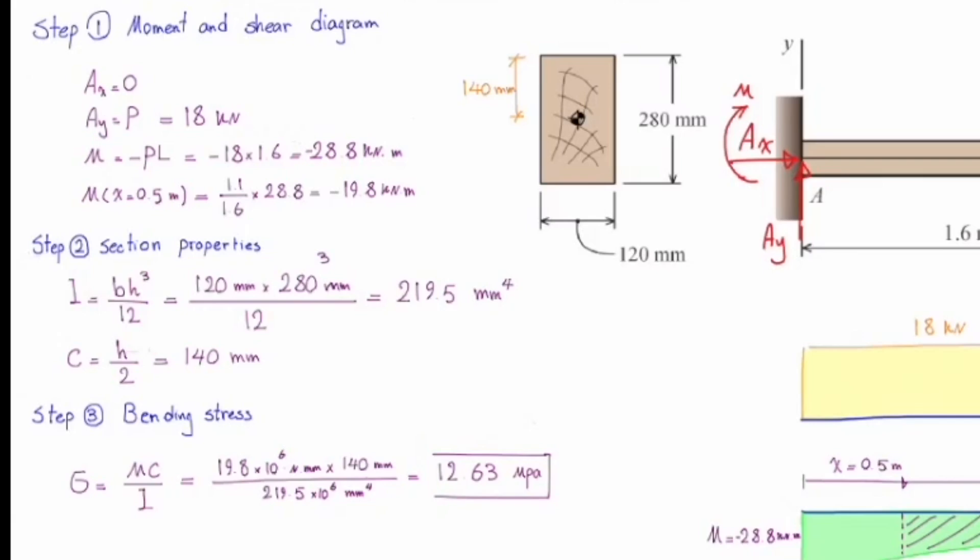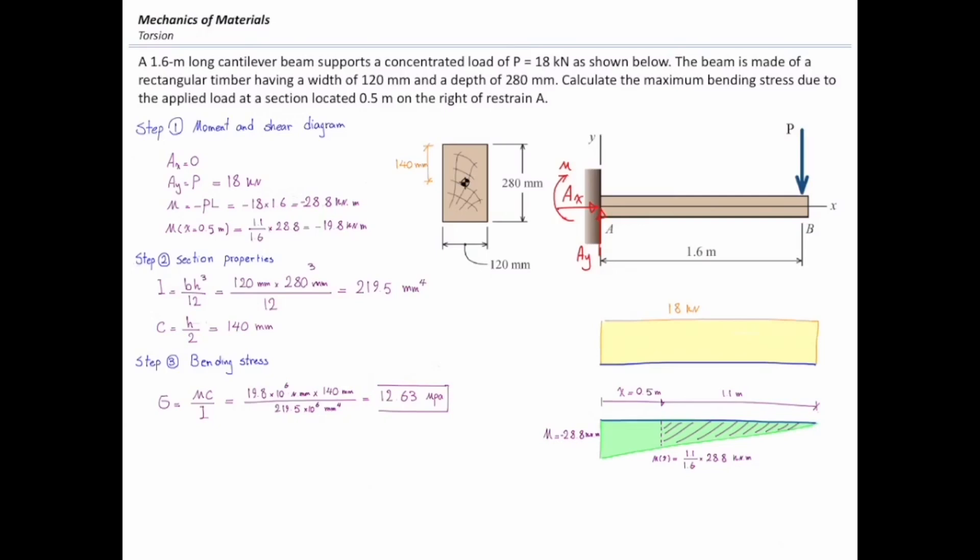Note that, in this problem, the section is symmetric, and it doesn't matter if the moment is positive or negative. The maximum compression or tension stress are equal to each other, and that would be either on the top of section or on the bottom of section. This is not the case for non-symmetric sections. We will talk about these kinds of sections in another problem.